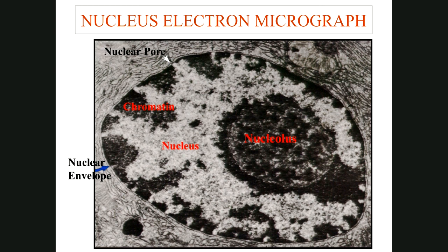Here's an electron micrograph of the nucleus: the nuclear envelope is visible around the outside, the nucleolus is in the middle, and if you look closely you can see little gaps in the envelope — those are nuclear pores. Inside is chromatin — there are no visible chromosomes because the cell is not dividing; when not dividing, DNA exists as long thin strands called chromatin.